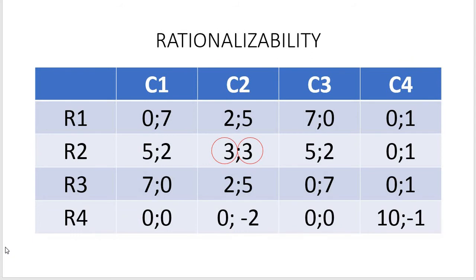The second problem regarding Nash equilibrium is that the rationality assumption alone is not enough to explain why we end up in Nash equilibrium and why we should treat that outcome as the solution of the game.